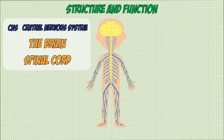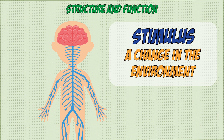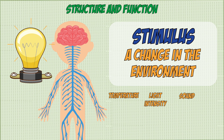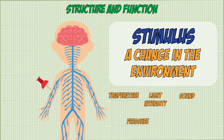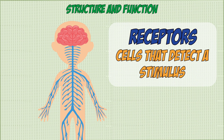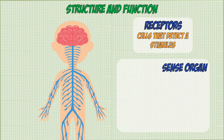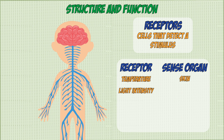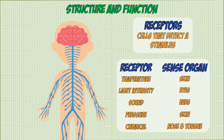The whole process of a nervous response starts with a stimulus — a change in the environment that we can sense. This could be temperature, light levels, sound levels, pressure when touching objects, and chemicals from smelling and tasting. Receptors are cells that detect a stimulus and are mainly found in sense organs. For example, temperature receptors are found in the skin, light receptors in the eye, sound receptors in the ears, pressure receptors in the skin, and chemical receptors in the tongue and nose.